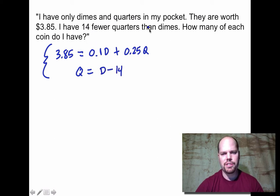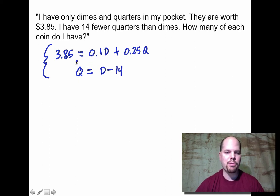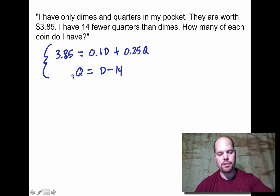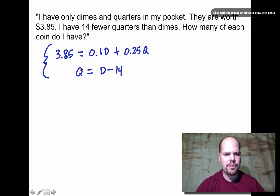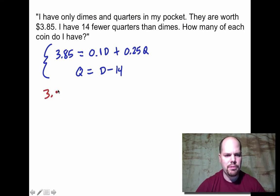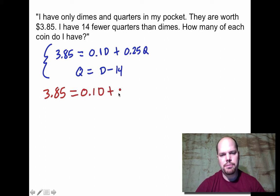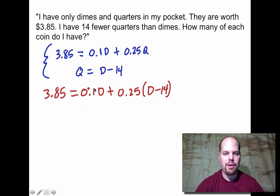We have 14 fewer quarters than dimes, so q = d - 14. We have a system with one variable isolated — q — so we substitute d - 14 in place of q. Substituting into the value equation: 3.85 = 0.10d + 0.25(d - 14). Now we have an equation with just the variable d.